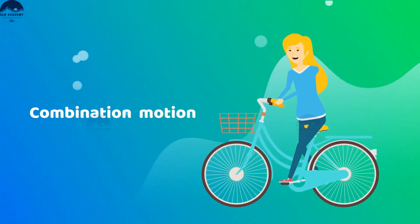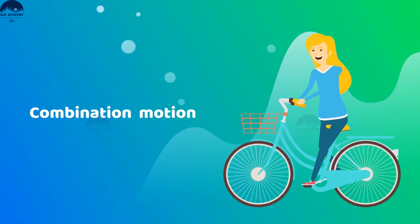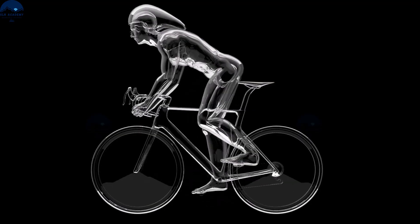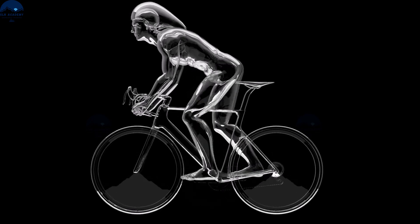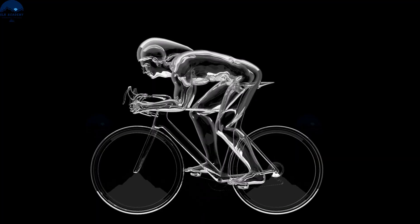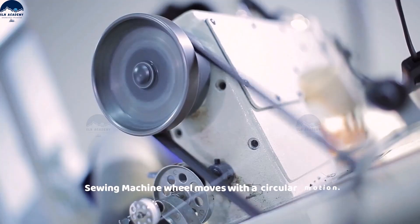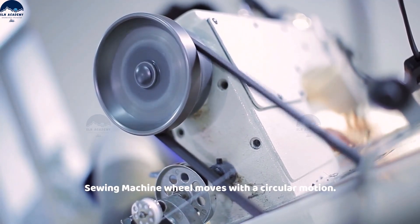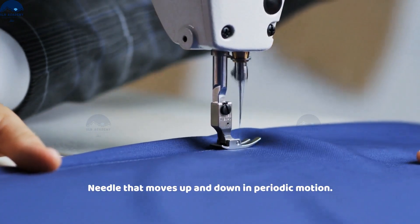Combination motion: at a given point of time, an object can show more than one type of motion. The movement of a cycle shows two types of motions — circular and rectilinear. In a sewing machine, the wheel moves with a circular motion while the needle moves up and down in a periodic motion.